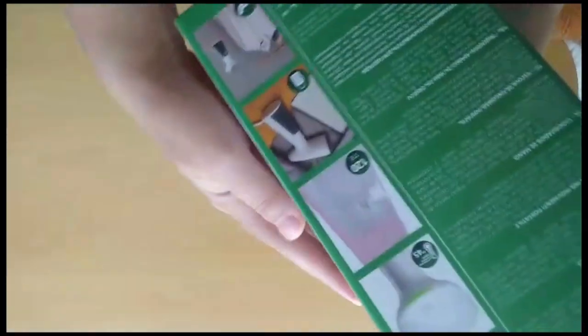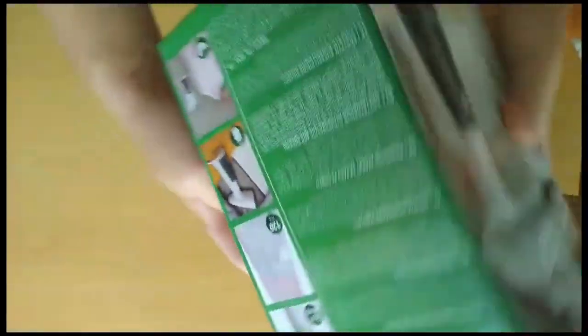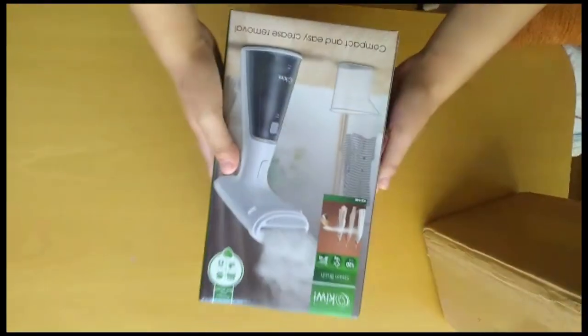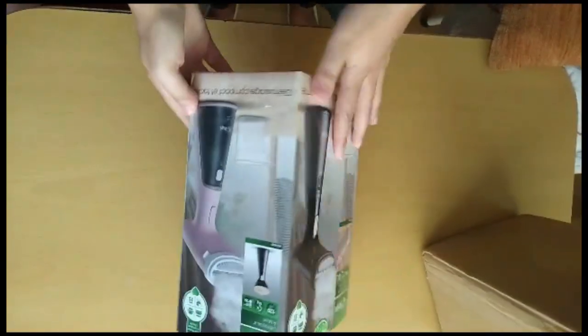Our iron, water filling scale, lint collector, warranty certificate, instructions for use, and a letter of appreciation are included in the box of the product.